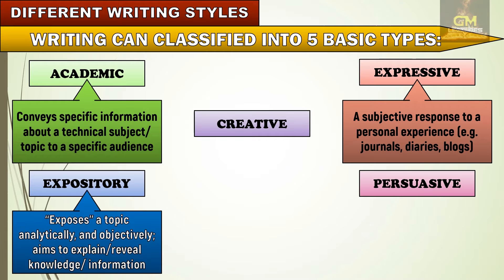Expository writing aims to expose a topic analytically and objectively. It aims to explain or reveal knowledge or a particular information. Consider news writing — writers aim to inform the readers about certain updates regarding a certain issue or topic.